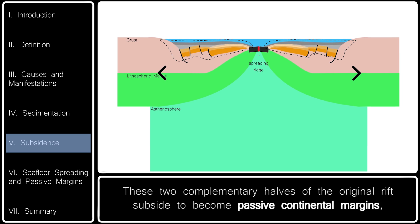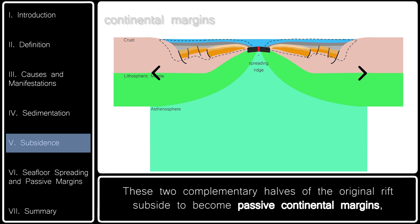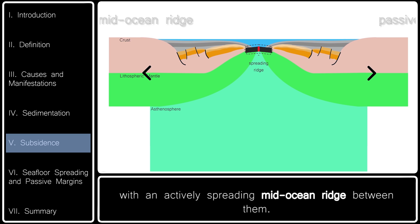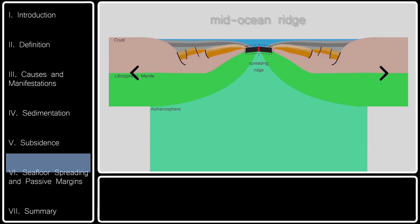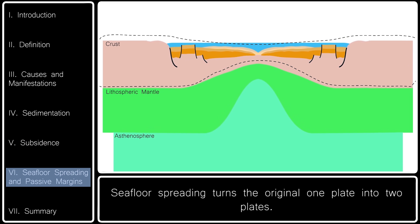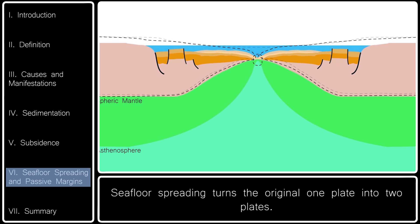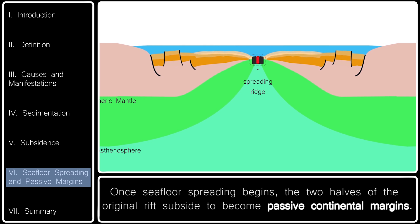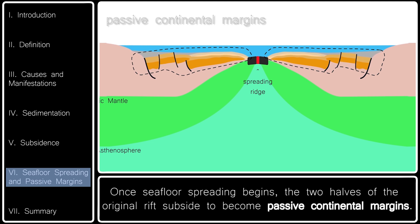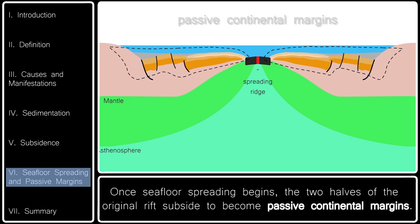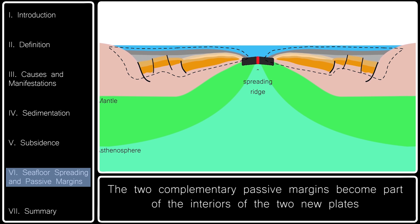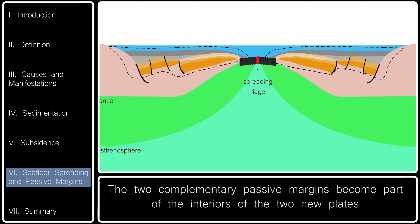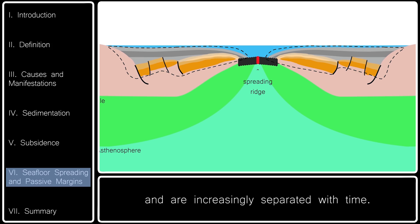These two complementary halves of the original rift subside to become passive continental margins, with an actively spreading mid-ocean ridge between them. Seafloor spreading turns the original one plate into two plates. Once seafloor spreading begins, the two halves of the original rift subside to become passive continental margins. The two complementary passive margins become part of the interiors of the two new plates and are increasingly separated with time.